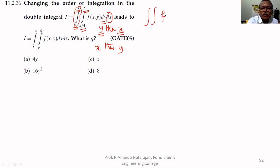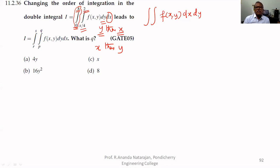So what you will get is a double integration of a function of x and y. Instead of dx dy, we rewrite it as dx dy in the new order — that is, first differentiating with respect to x. If you do that, then you will get the problem, because the limits have to be changed.